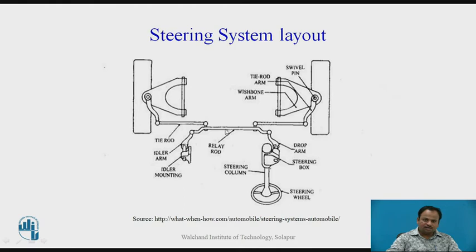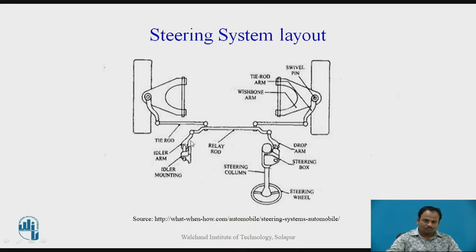This center link is also called a relay rod. On the other side of the drop arm, there is an idler arm. It serves the purpose of the drop arm but does not have any steering moment directly given, so it follows the path of the drop arm — therefore it is called an idler arm.